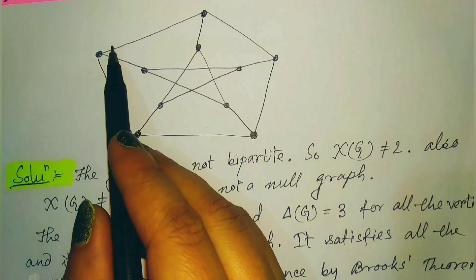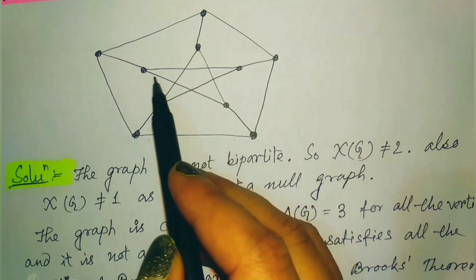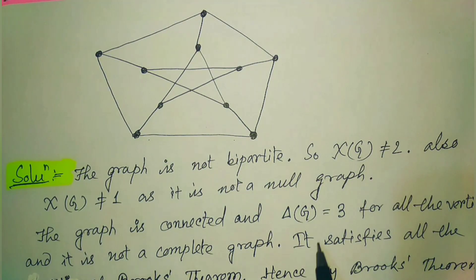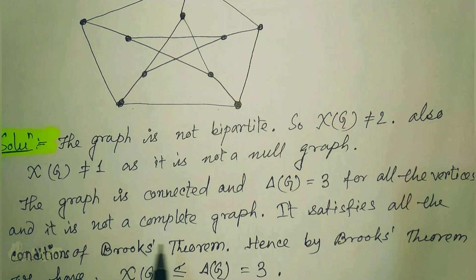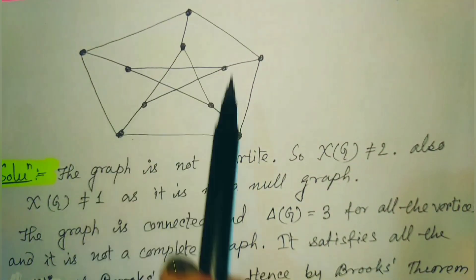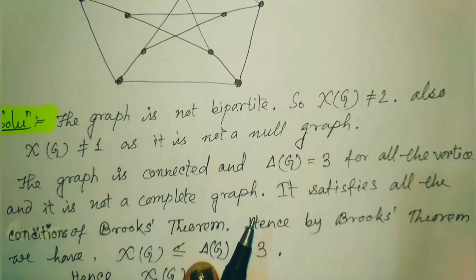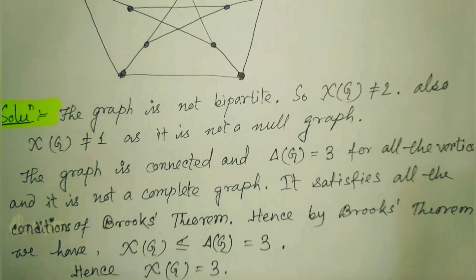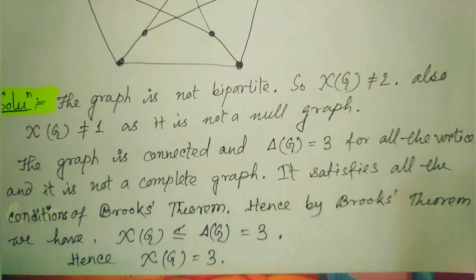Finding the highest degree: all vertices have degree 3, so the maximum degree Δ(G) = 3. It is not a complete graph. Since it satisfies all the conditions of Brooks' theorem — it is a connected simple graph, and not a complete graph or odd cycle — Brooks' theorem applies: χ(G) ≤ Δ(G) = 3.